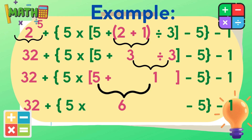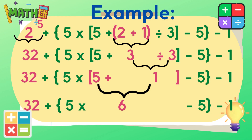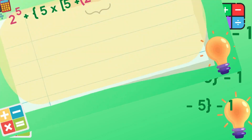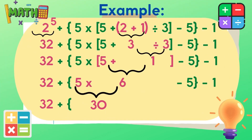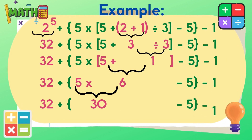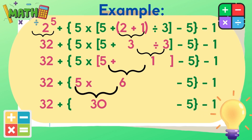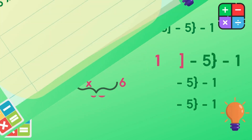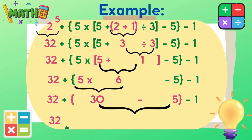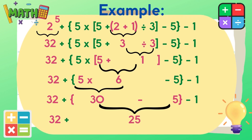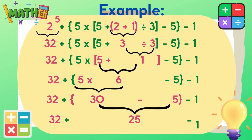Now, let's perform the operations inside the braces. We have multiplication and subtraction, so let's multiply first. 5 times 6 is equal to 30. Now let's subtract: 30 minus 5 is equal to 25.